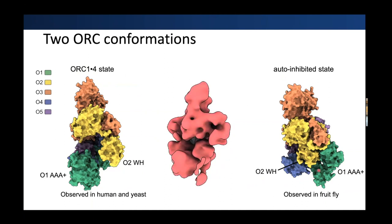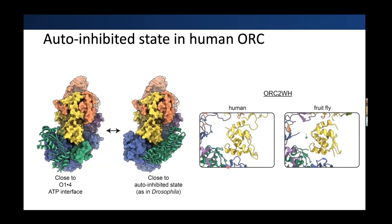The auto-inhibited state was seen in Drosophila, and the canonical state was seen in humans and yeast. Our map seems to show the ORC1 AAA+ dynamically moving near both of these conformations. Furthermore, when you look at the ORC2 wing helix, it is also buried in the structure where the ORC1 AAA+ domain is moving dynamically. Comparing the auto-inhibited state of the fruit fly and humans, the conformations are very similar. So it seems we see the auto-inhibited state in humans also, and this conformation seems more prevalent in eukaryotes.